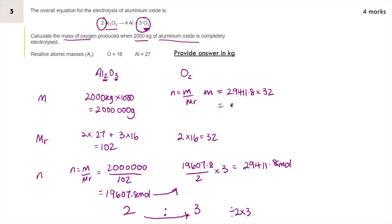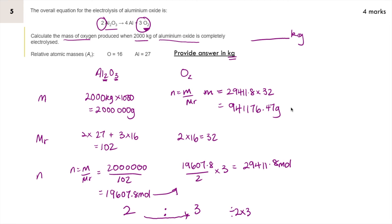That comes out as 941176.47 grams. However, the answer line has kilograms written on it, so they want you to convert this mass to kilograms. We need to divide by a thousand, and that comes out as 941 kilograms.